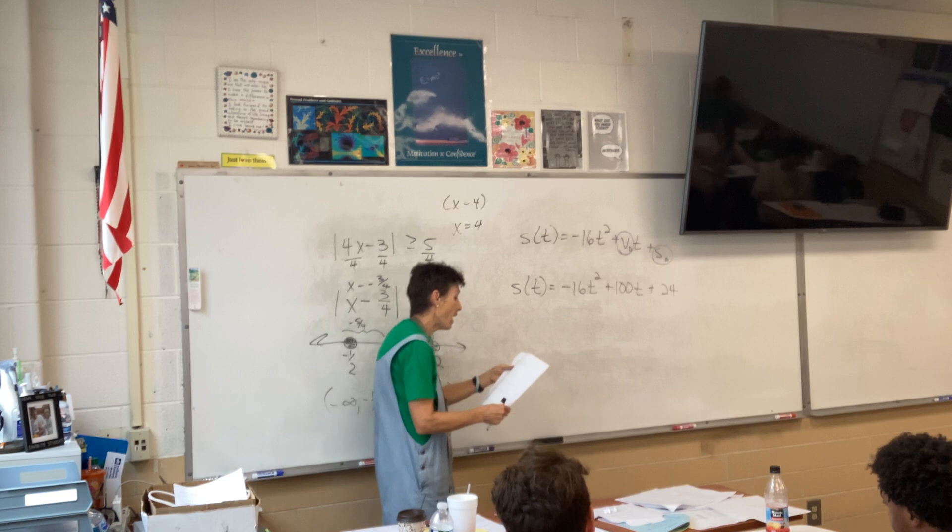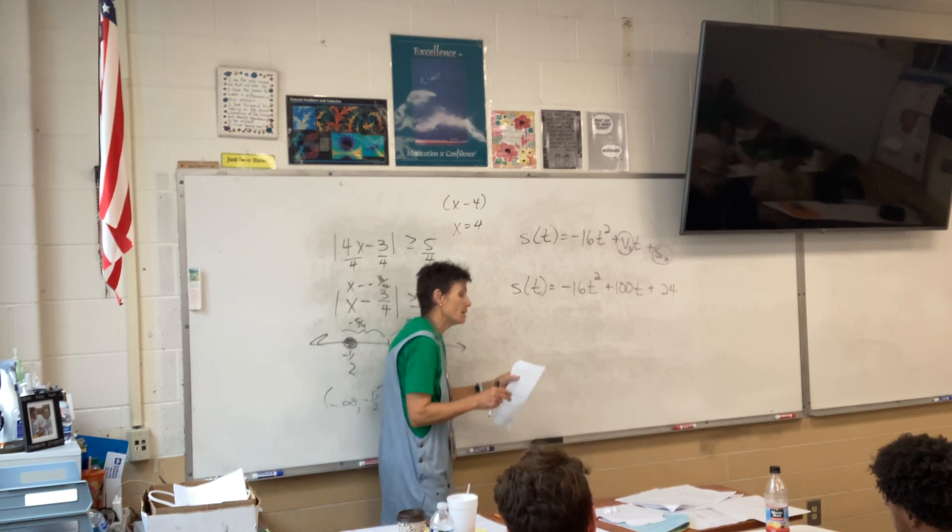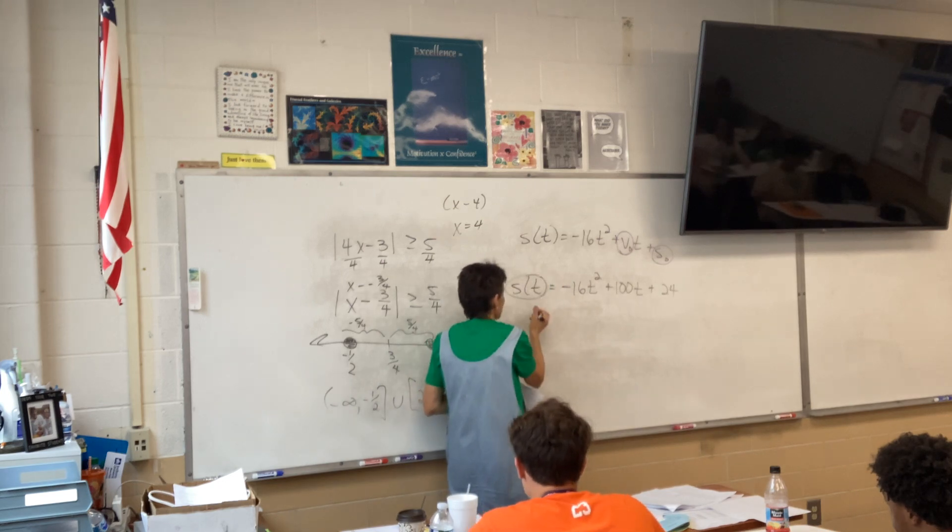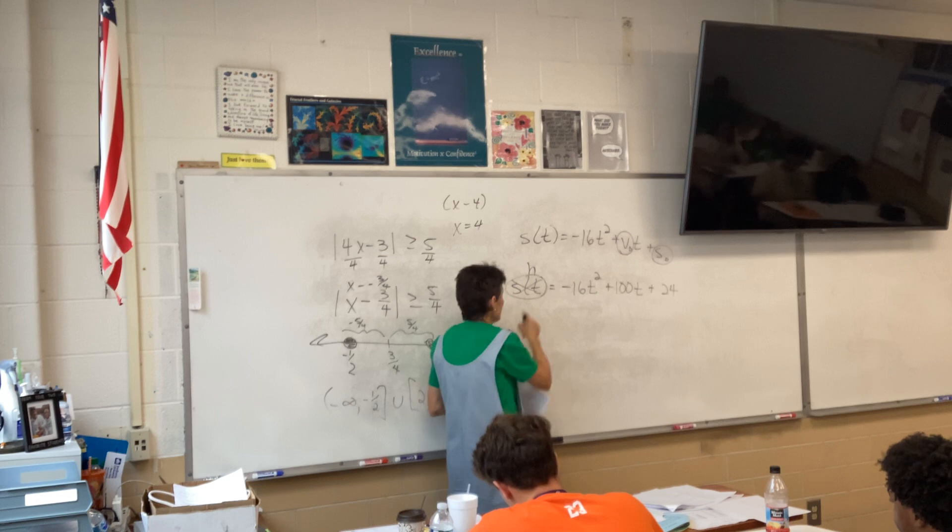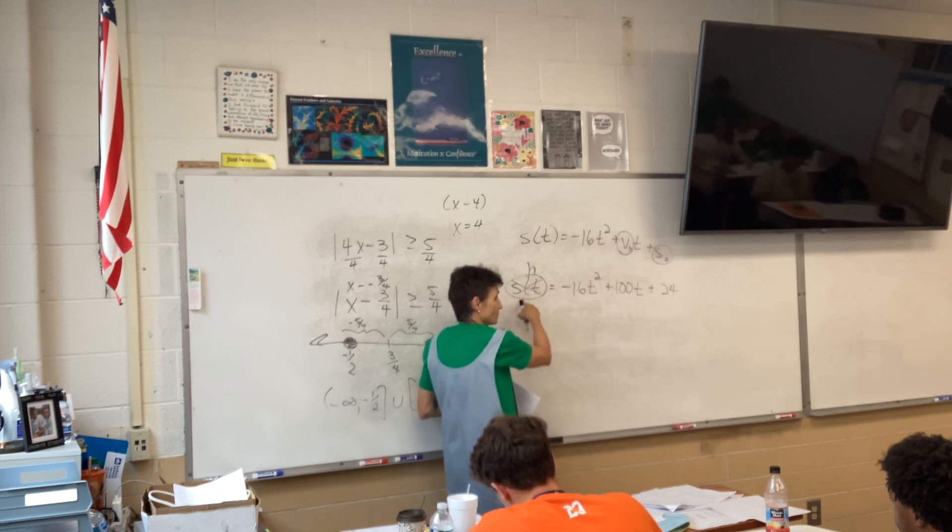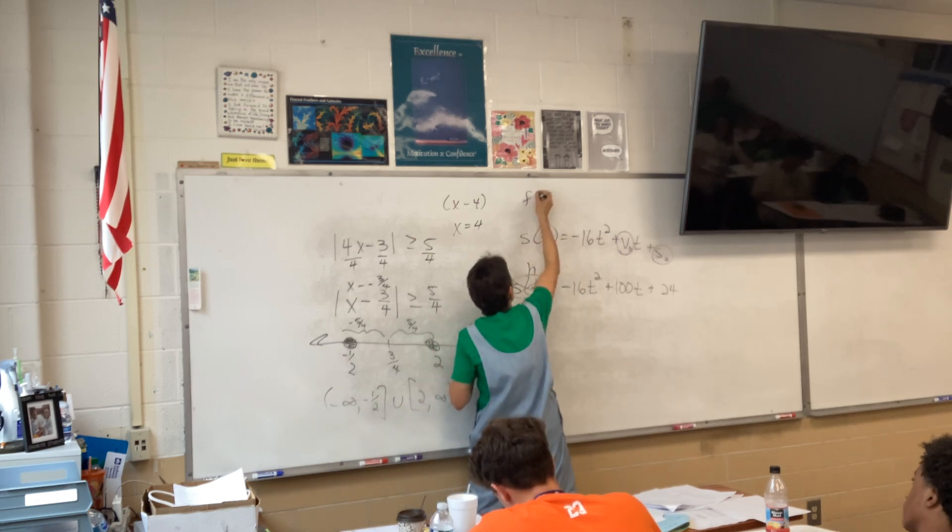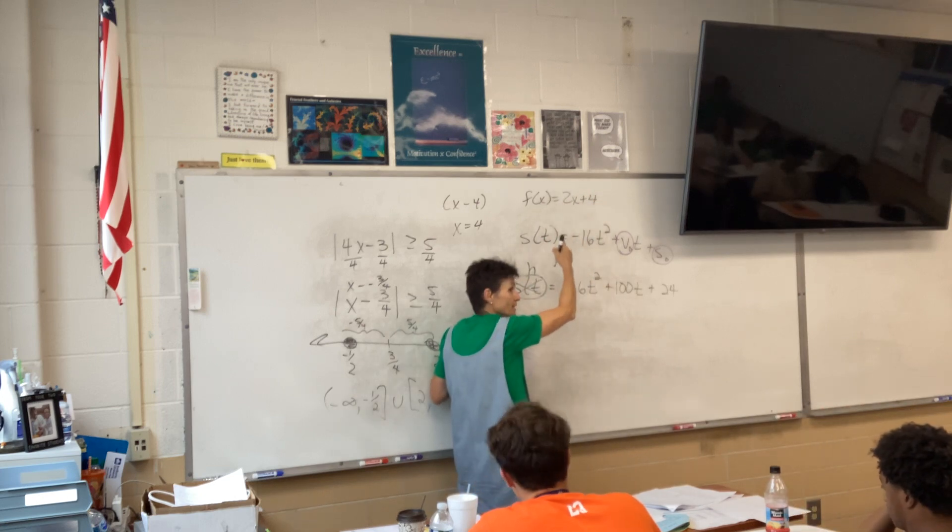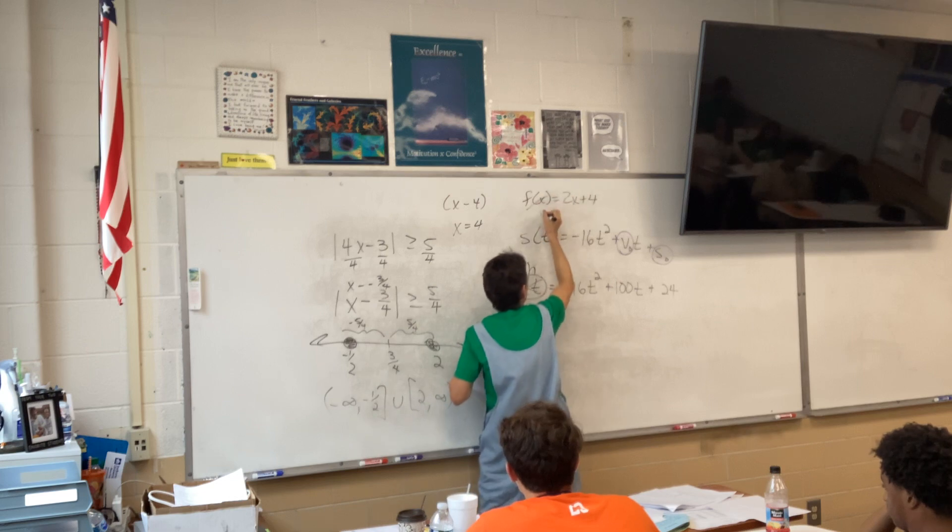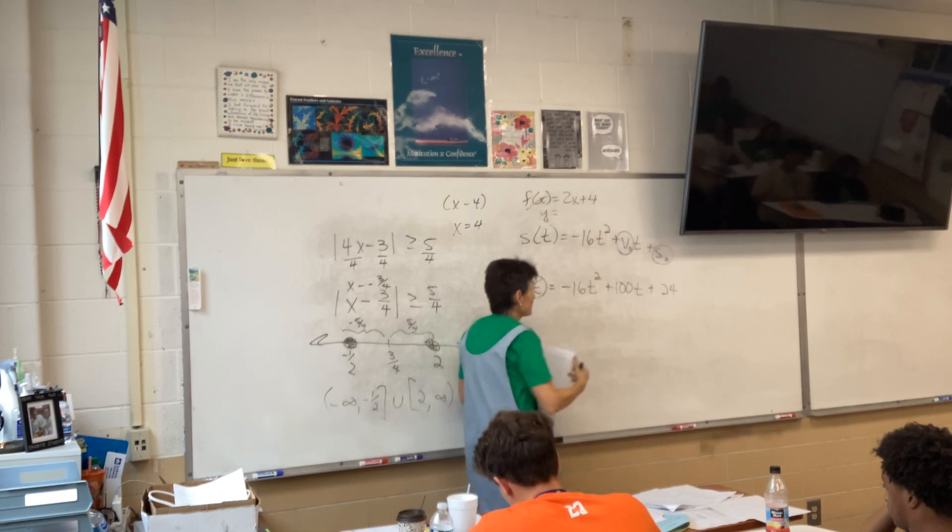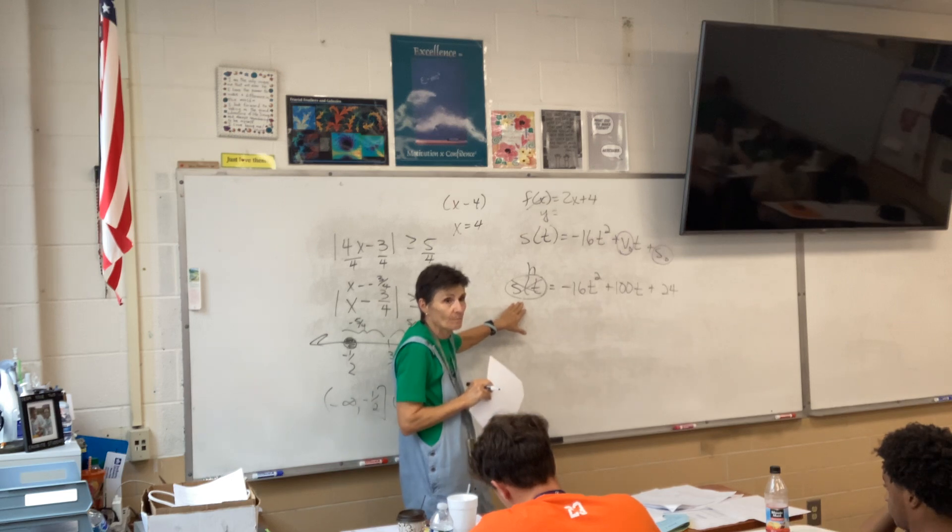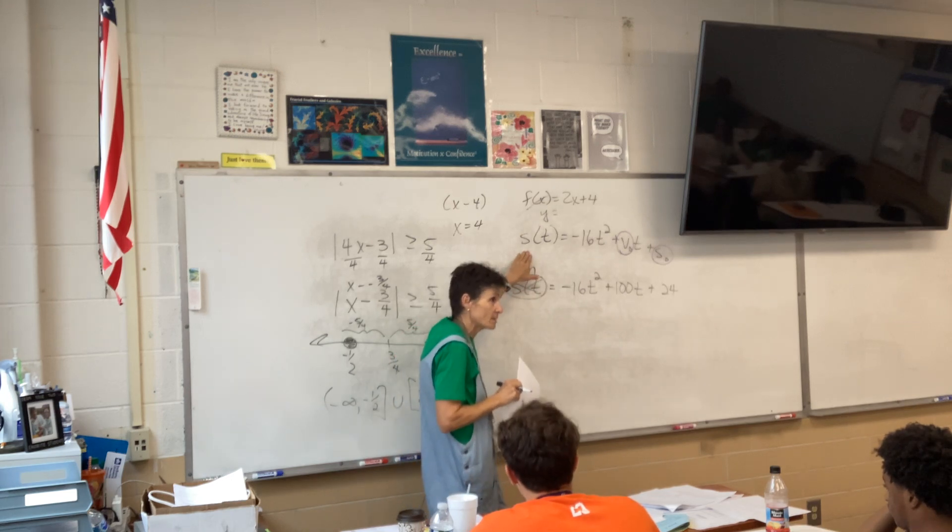If you drop something, the initial velocity is zero. If it's starting on the ground, like a firecracker, the initial height is zero. Otherwise, they're actually going to put the numbers into it like they did here and you're going to know. All right, so this is our equation that we're going to use.